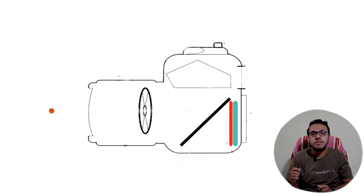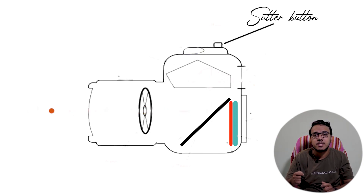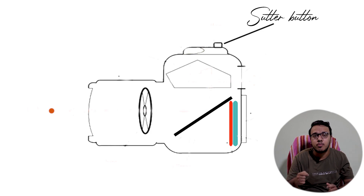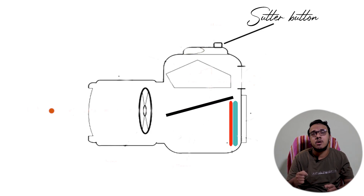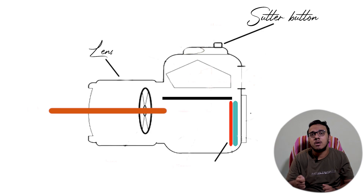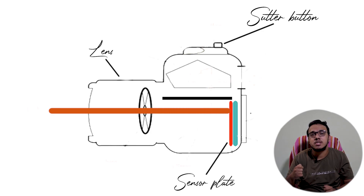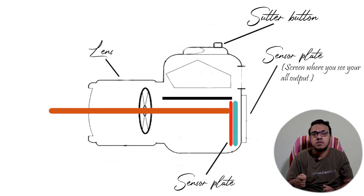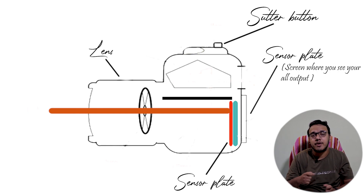When we click the shutter button or capture button, the mirror flips up and the light from the lens hits the sensor. This is how our camera works to capture a photo.